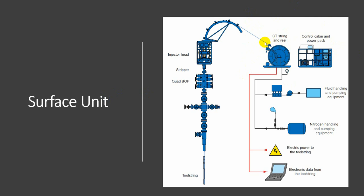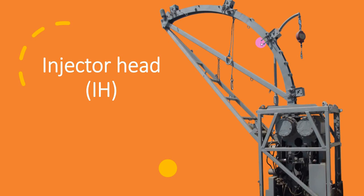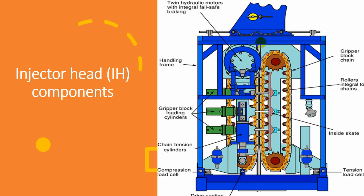Today we will talk about the injector head. The injector head consists of many components and is, in my opinion, the most revolutionary invention of coiltube. In this section we can see all of these components. It consists of loading cylinders — or traction pressure cylinders — and here we can see two hydraulic motors.